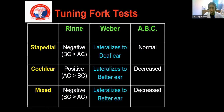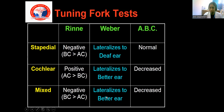In cochlear type of otosclerosis, Rinne's test will be positive — air conduction is better than bone conduction. In Weber's test, if unilateral sensorineural hearing loss, it lateralizes to the opposite better ear. The ABC test confirms sensorineural hearing loss — bone conduction is reduced in both ears. In mixed type of otosclerosis with both stapedial and cochlear components, Rinne's test will be negative due to the conductive component, bone conduction is more than air conduction, and it lateralizes to the better ear. ABC test is reduced in both ears.